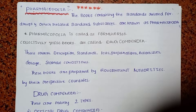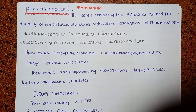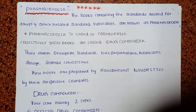So what is pharmacopoeia? The main pharmacopoeia is a book related to drugs and other related substances, covering purity tests, standards, preparations, and uses.